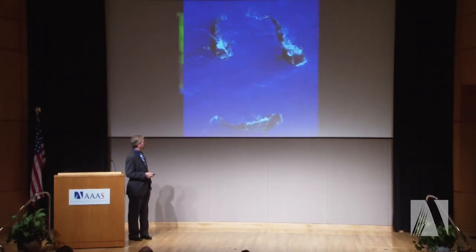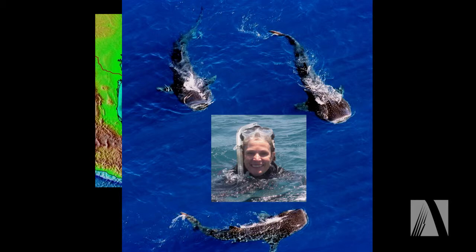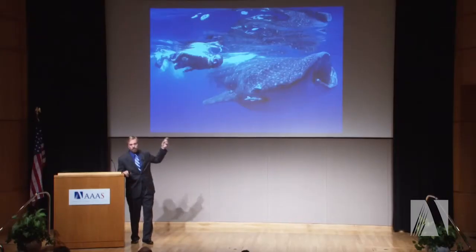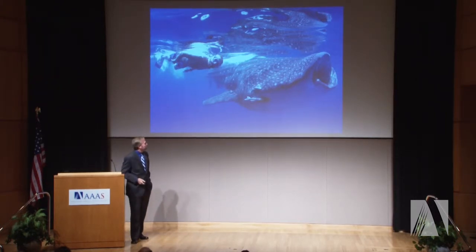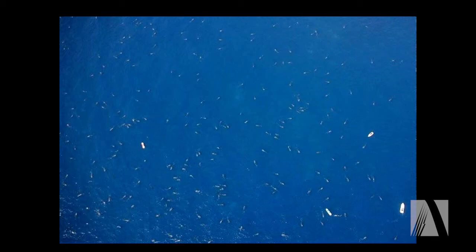I've worked off the Yucatan Peninsula for a number of years on the whale shark — the largest fish that's ever existed. Sylvia Earle was down there with us in 2005. This is an area where whale sharks come together in great numbers to feed. From an aerial shot at about 1,000 feet, they look like tadpoles — hundreds of them feeding. We've published on this recently; we think as many as 1,400 come to this area during the summertime. It's a species that is vulnerable but doing fairly well in this part of the world; fortunately, they're not fished.